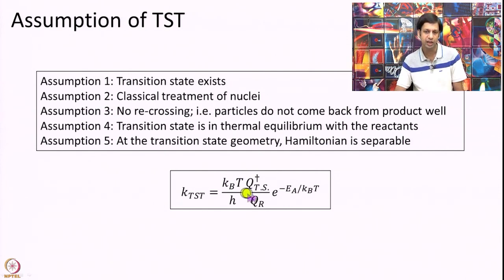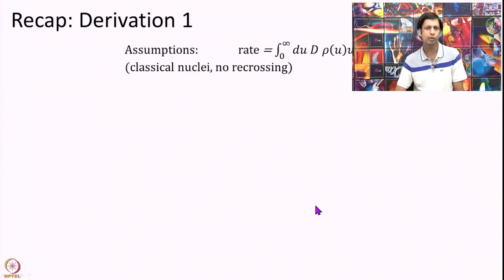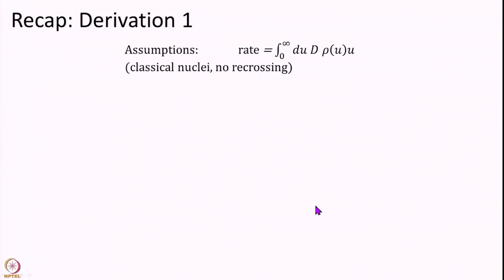Under these 5 assumptions we derive the TST rate equation. We have provided you 2 proofs and I just want to give you a quick recap of what those 2 proofs were.